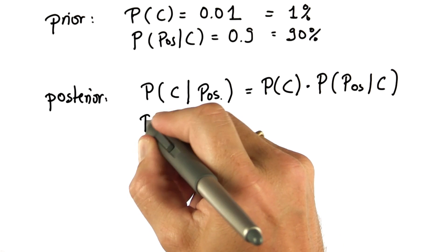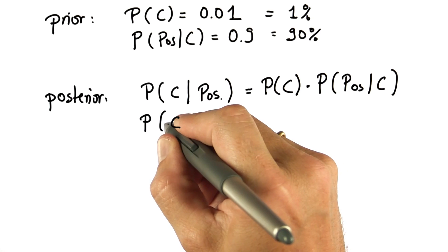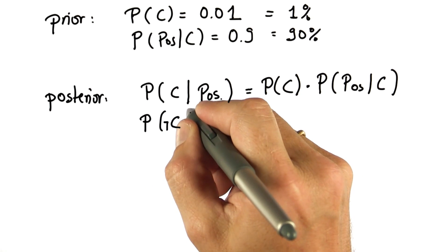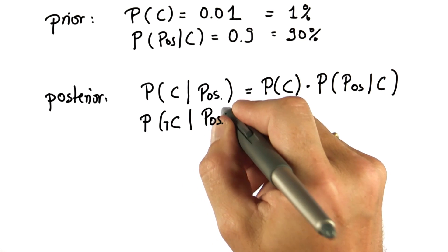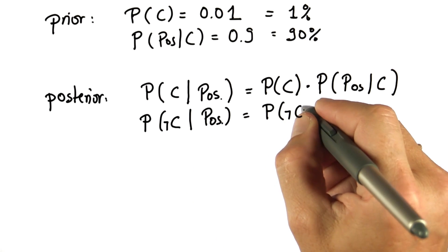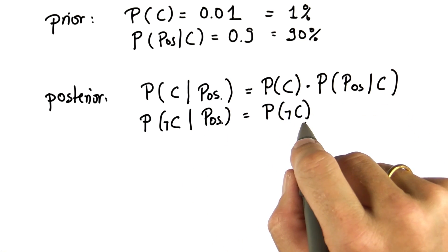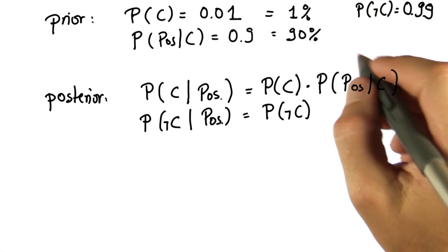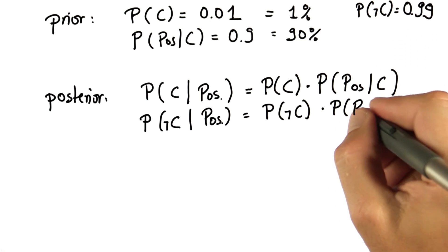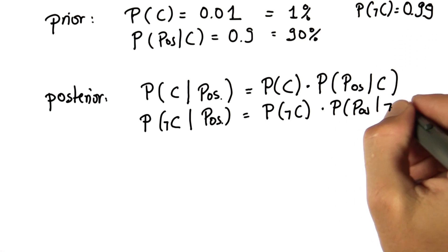To make this correct, we also have to compute the posterior for the non-cancer option, written here as not cancer, given a positive test. And that's using the prior. We know that P of not C is 0.99. It's 1 minus P of C, times the probability of getting a positive test result given not C.